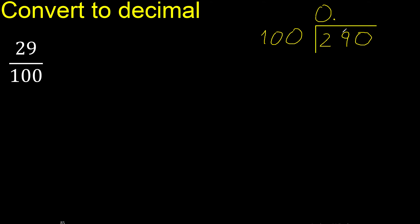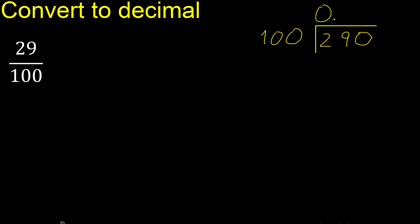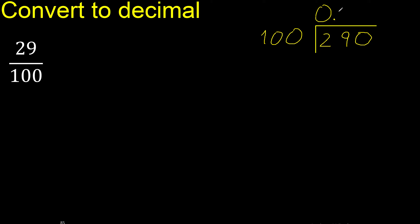The point is here. 100 multiplied by which number is nearest to 290 but not greater? 100 multiplied by 3 is 300, which is greater, therefore multiplied by 2 is 200.